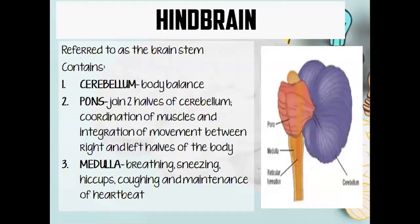For the last structure, we have the hindbrain, also referred to as the brain stem. It is at the back of our brain. It contains first the cerebellum, the blue structure, which maintains body balance. Second is the pons, which joins the two halves of the cerebellum and is responsible for the coordination of muscles and integration of movement between the right and left halves of the body. We also have the medulla, which is responsible for breathing, sneezing, hiccups, coughing, and maintenance of heartbeat.